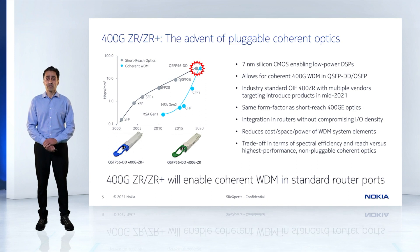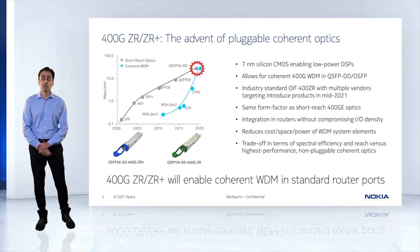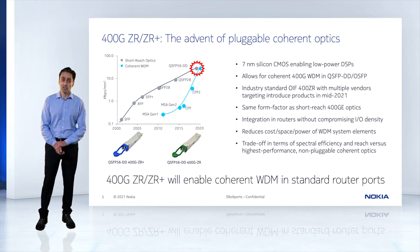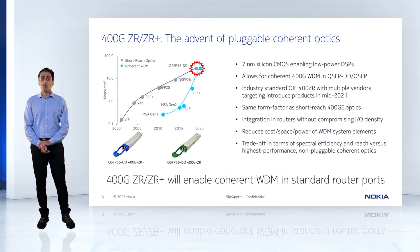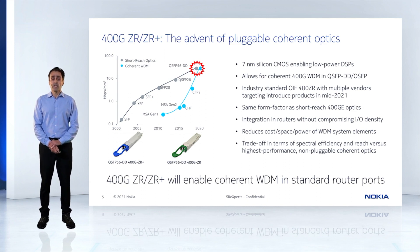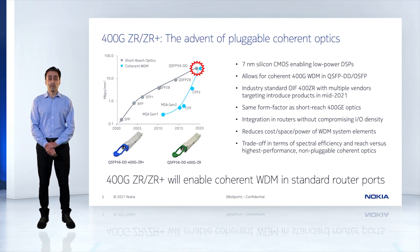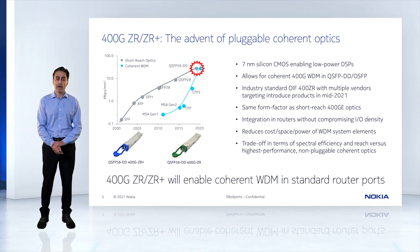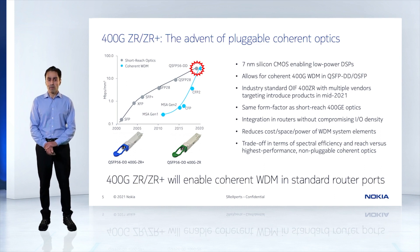So what enabled this? Advances in technology and also standardization. 400G ZR and ZR+ will enable QSFP-DD in standard router ports, so you're not going to lose router capacity just by plugging DWDM optics into your router.